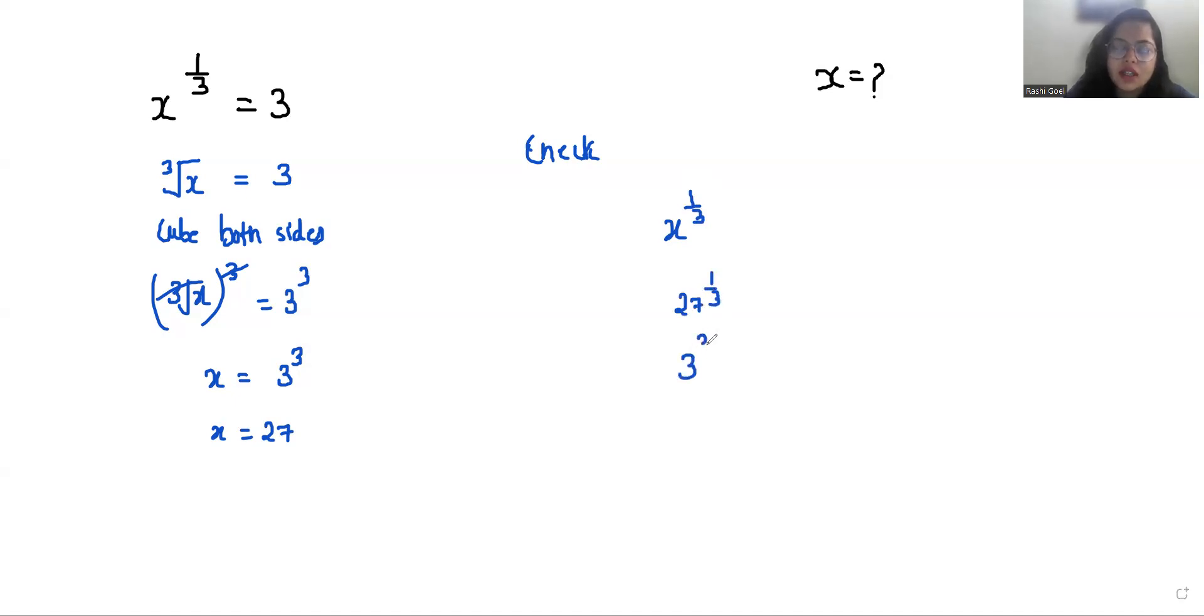by 3. 27 we can write as 3 power 3 times 1 by 3, which equals 3. That equals our RHS, so the value of x is 27. I hope it's clear and you find it useful. Please give us a thumbs up and subscribe to my channel. Thank you.